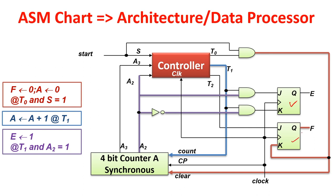The complete diagram: 2 flip-flops (E and F) and a counter form the data path components. The controller takes 2 inputs from the counter — A2 and A3 — and externally takes start. The controller generates signals indicating which state it is in: if in state T0, T0 output is activated; if in state T1, T1 output is activated; if in state T2, T2 output is activated. From T0, T1, and T2, the operations are generated.